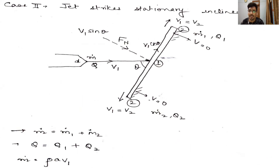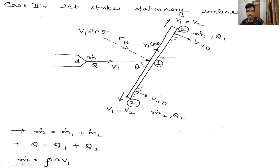The next case is a jet striking a stationary inclined plate. The plate is now inclined — there is some angle theta between the plate and the jet. D is the diameter of the nozzle, M_dot is the mass flow rate, V1 is the jet velocity, and theta is the inclination of the plate with respect to the jet. Because the plate is inclined, the discharge on each side differs: M_dot1 and M_dot2, with corresponding discharges Q1 and Q2.